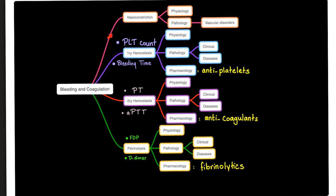How do we test for primary hemostasis? Platelet count, bleeding time, and platelet aggregometry. How do we test for secondary hemostasis? PT, PTT, and TT. For fibrinolysis: FDP and D-dimer.